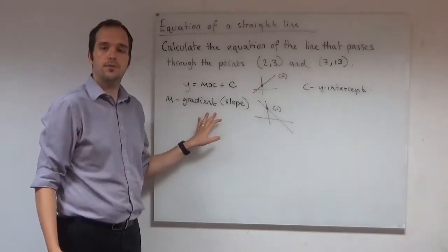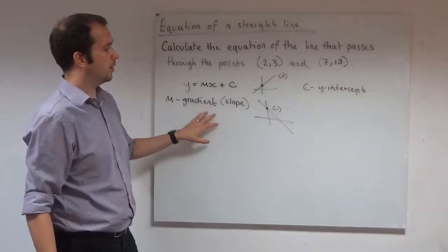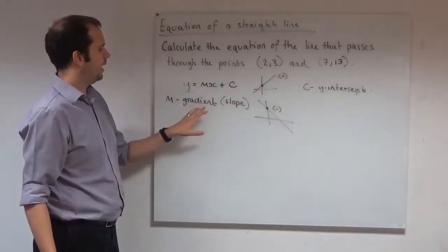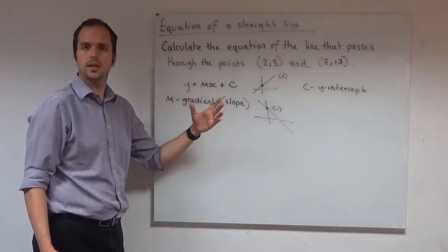Let's start off by finding the gradient. We have to find the gradient first because we're going to use the gradient to help us find our intercept. So let's think about the gradient for a second. It's a measure of the slope, the steepness of the line.